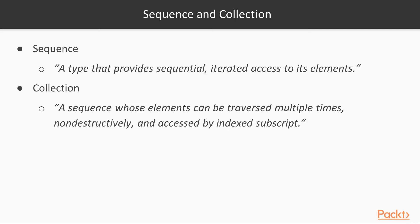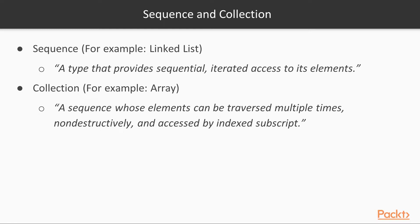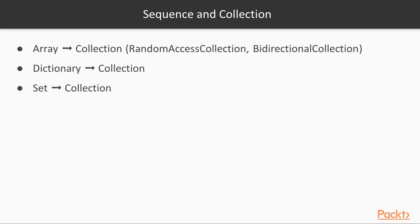They sound quite similar but there are important differences. In terms of classical data structures, a good example of a sequence is a linked list, which allows you to access its elements in order but does not provide random access. On the other hand, a classic collection is an array, since an array can be accessed by an indexed subscript. Array inherits from Collection via two further protocols: Random Access Collection and Bidirectional Collection.